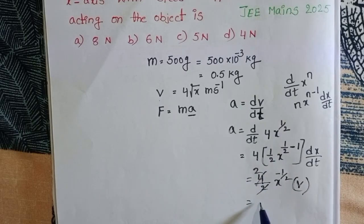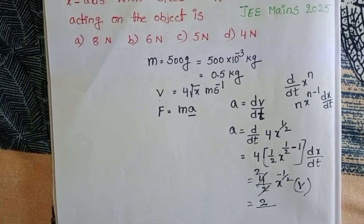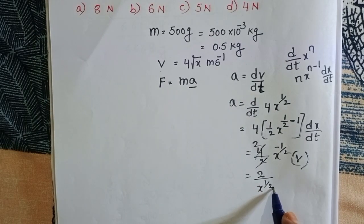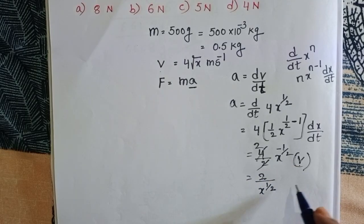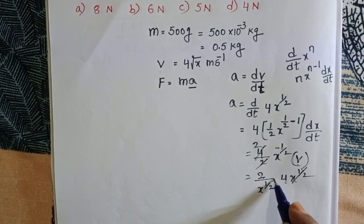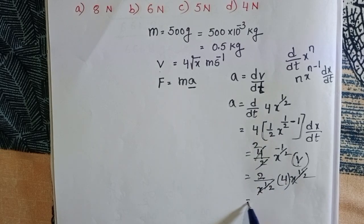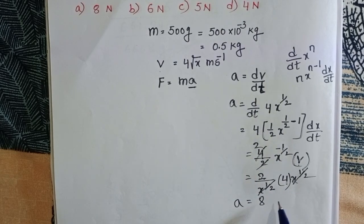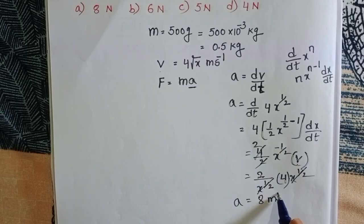Simplifying: 4 times 1/2 equals 2. We have 2 divided by x to the power 1/2, times velocity which is 4 times x to the power 1/2. The x to the power 1/2 terms cancel. 2 times 4 equals 8. So acceleration is 8 meters per second squared.